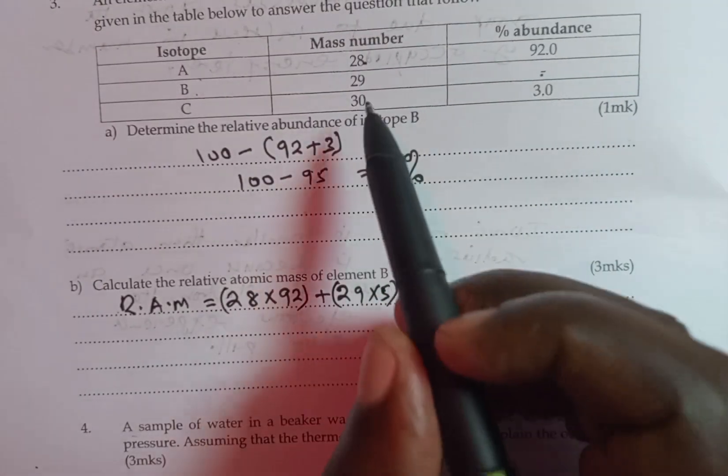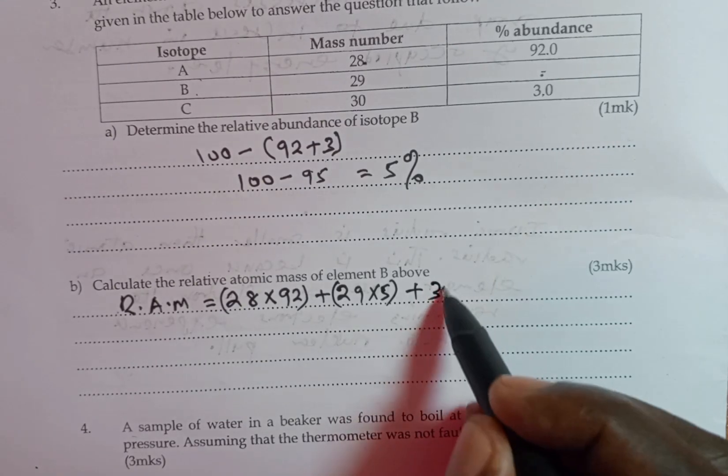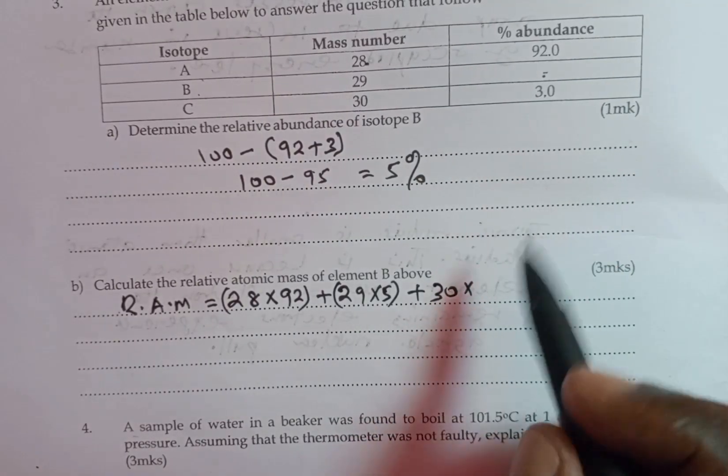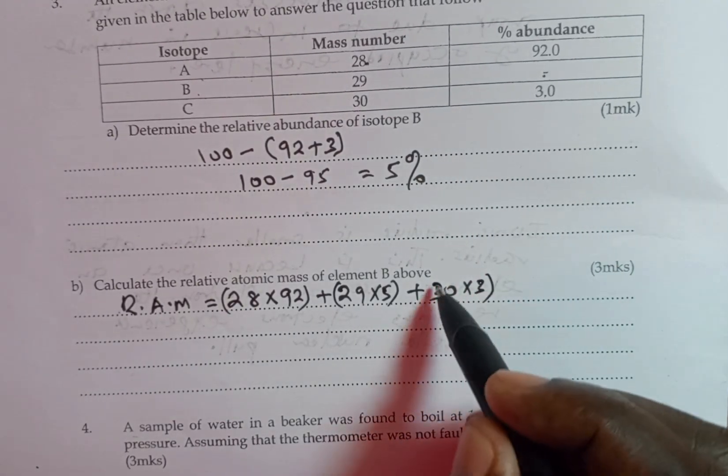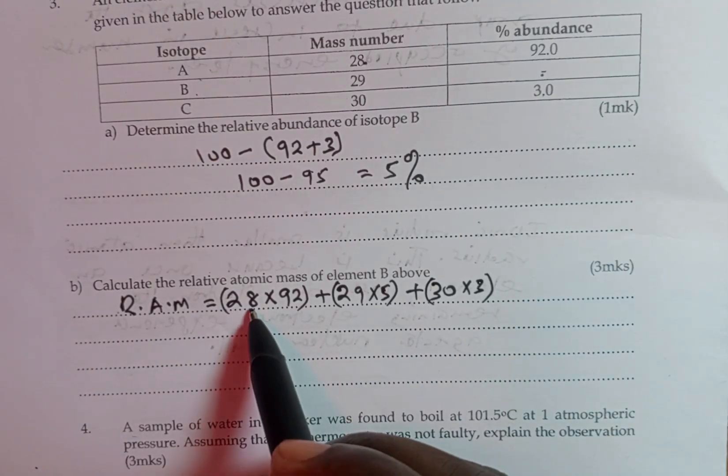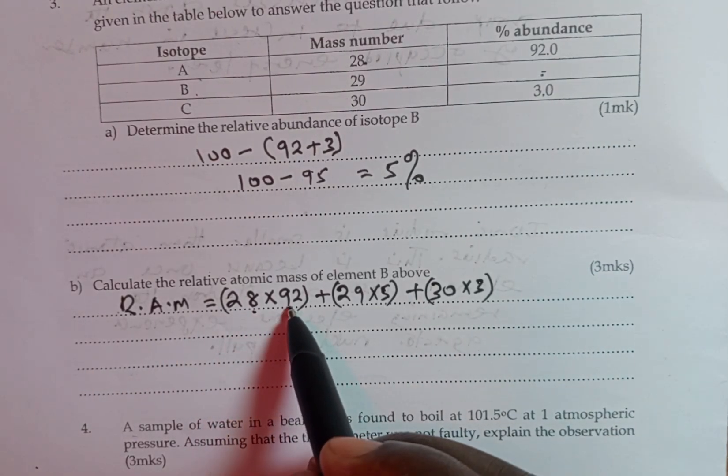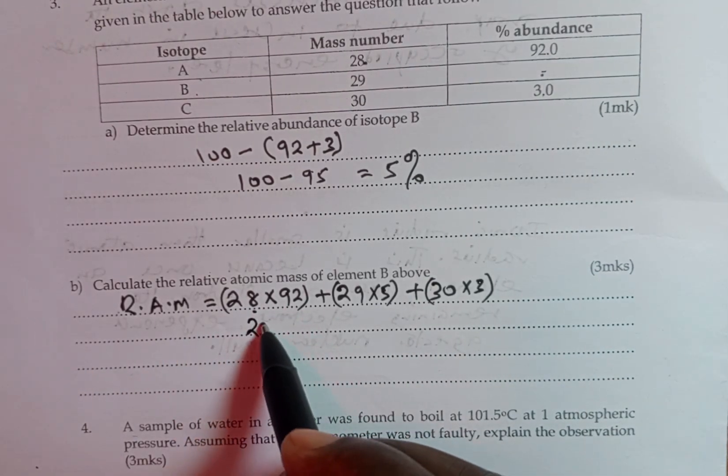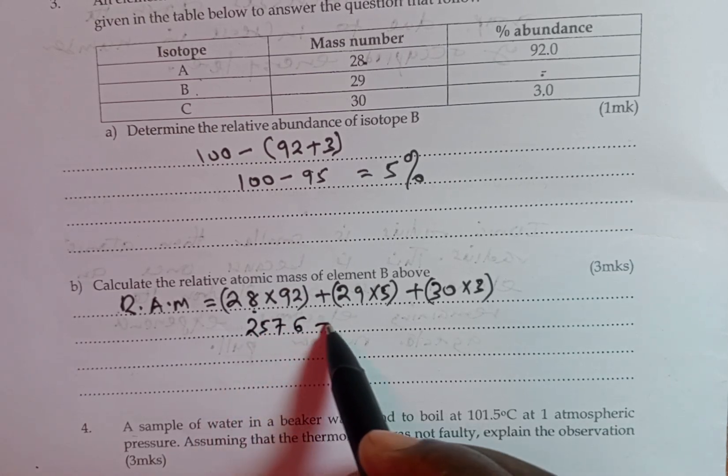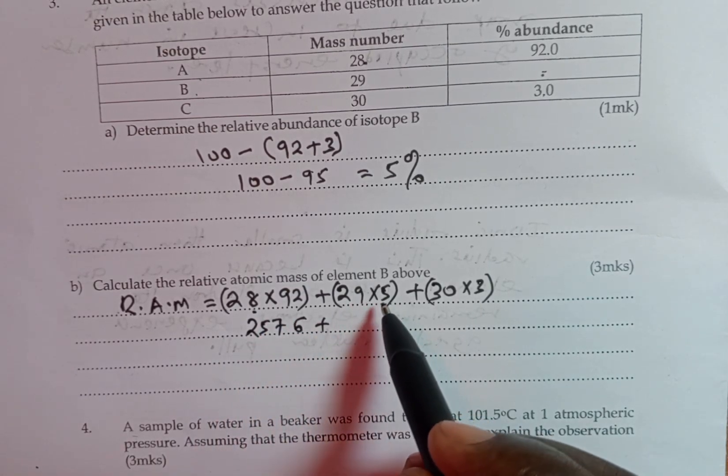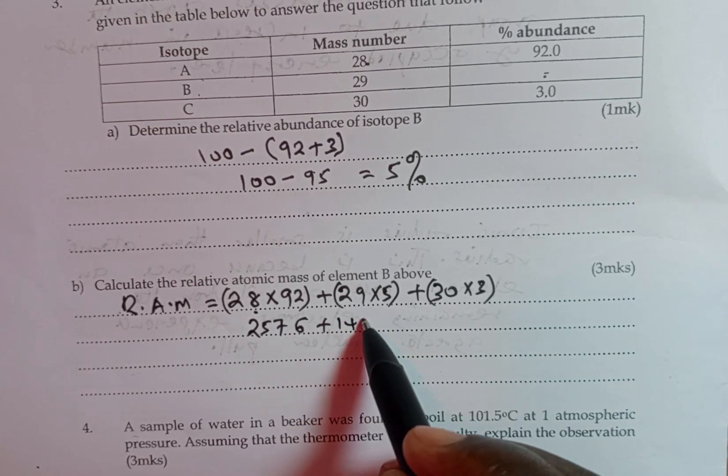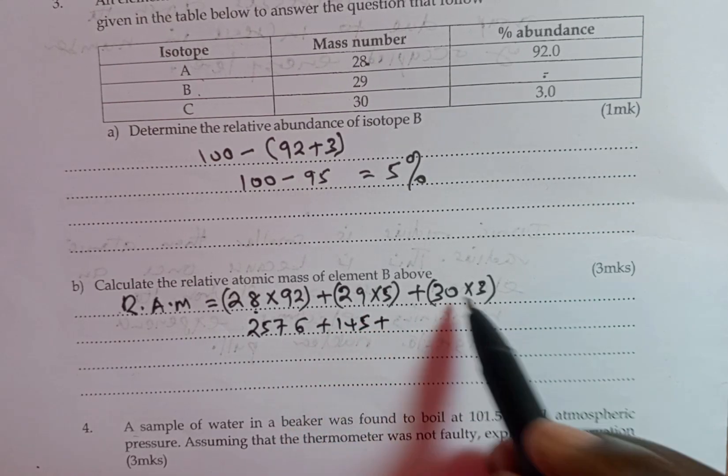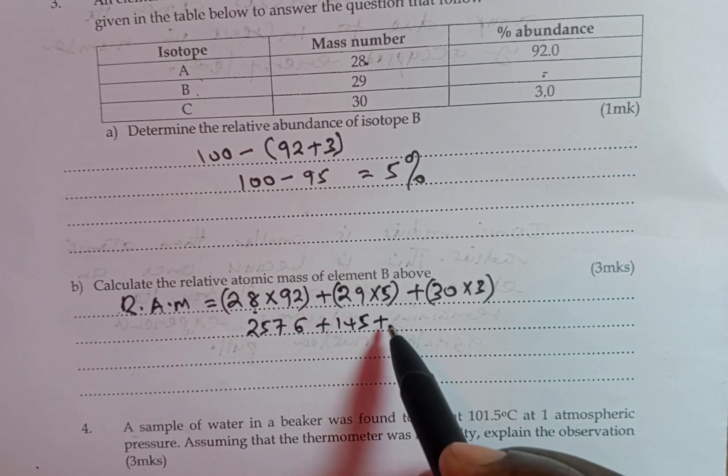We add 30 multiplied by the percentage abundance of 3%. 28 times 92 would give us 2576. We add 29 times 5, which gives us 145. Then, plus 30 times 3, giving us 90.